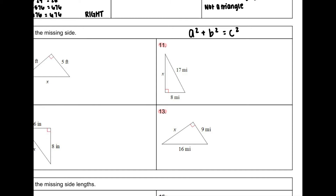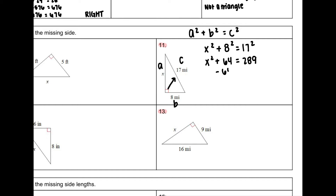So I'm going to label my sides in number 11. Across from the 90-degree angle is 17, so that's my C, and my two legs are A and B. I don't know what A is — it's X. So X squared plus 8 squared equals 17 squared. Simplifying: X squared plus 64 equals 289. I subtract 64 from both sides, leaving X squared equals 225. Taking the square root of both sides, X equals 15.